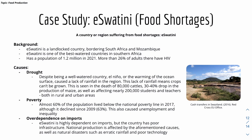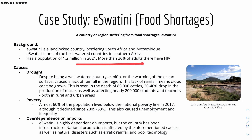Our second case study is East Eswatini, formerly Swaziland — a landlocked country bordering South Africa and Mozambique, and one of the best-watered countries in Southern Africa, with a population of around 1.2 million as of 2021. Despite being well-watered, El Niño — the warming of the ocean surface — causes a lack of rainfall in the region, meaning crops can't be grown, leading to deaths of cattle and drops in maize production affecting rural and urban communities.